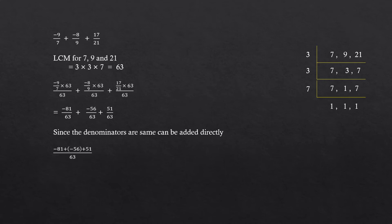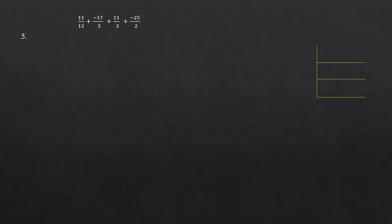That is minus 81 plus minus 56 plus 51 whole divided by 63, which is equal to minus 86 by 63. Question number 5.